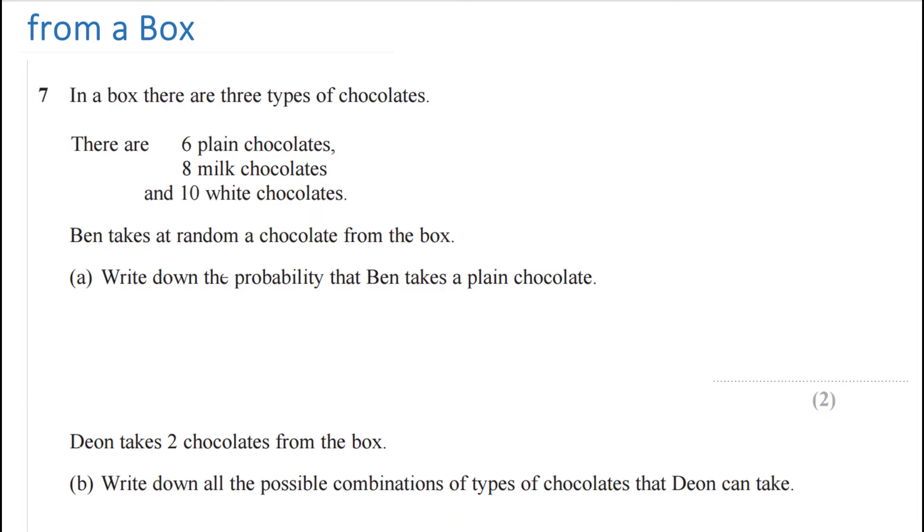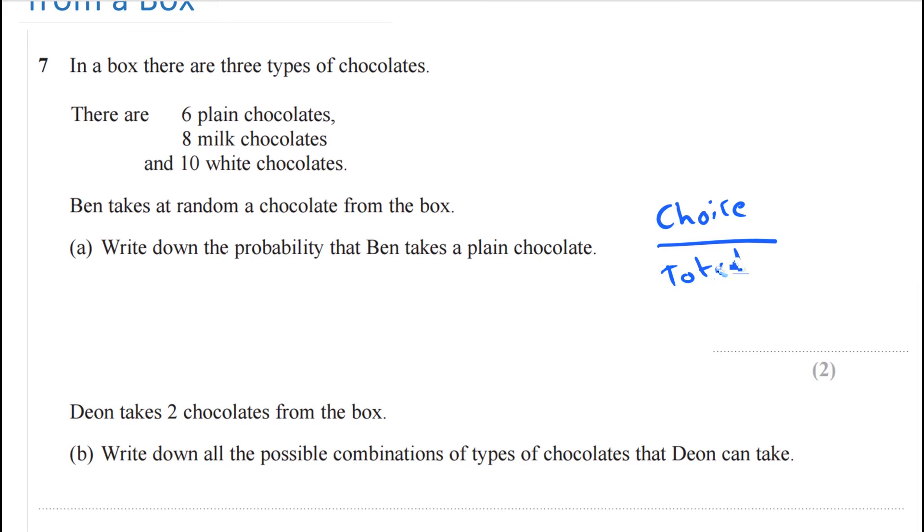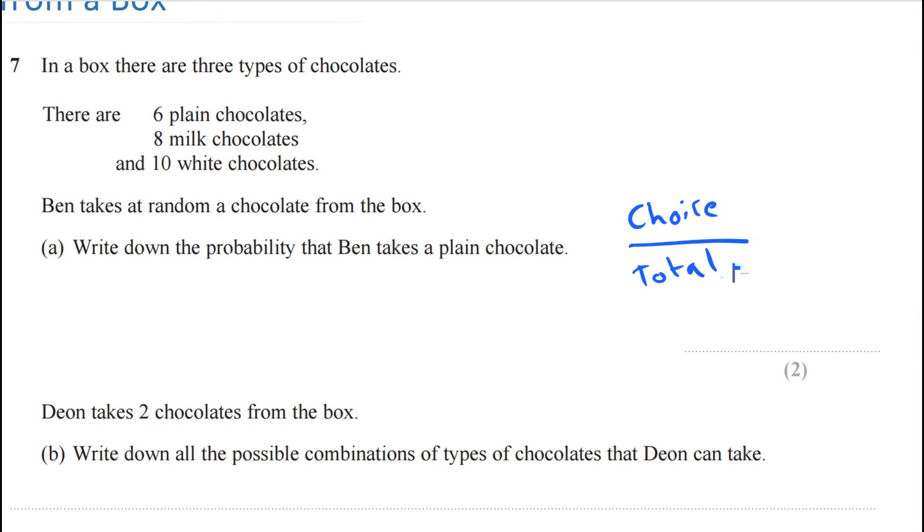Our probabilities have a total at the bottom and they have a specific choice at the top. So what's our choice here? What's he picking? He's picking plain chocolate, so let's call it six because there are six plain chocolates as his choice. Basically what I'm trying to say is there are six chocolates in the bag.